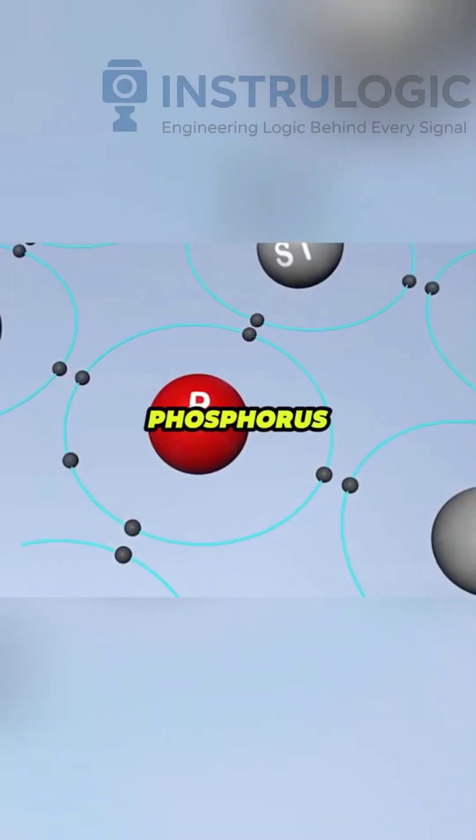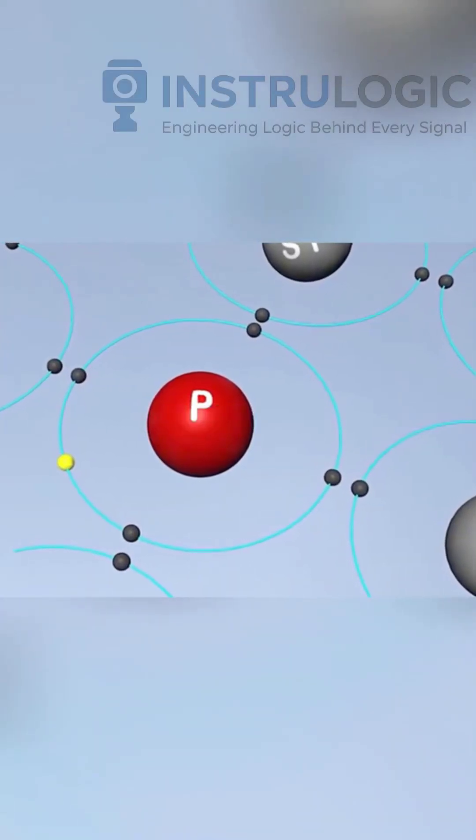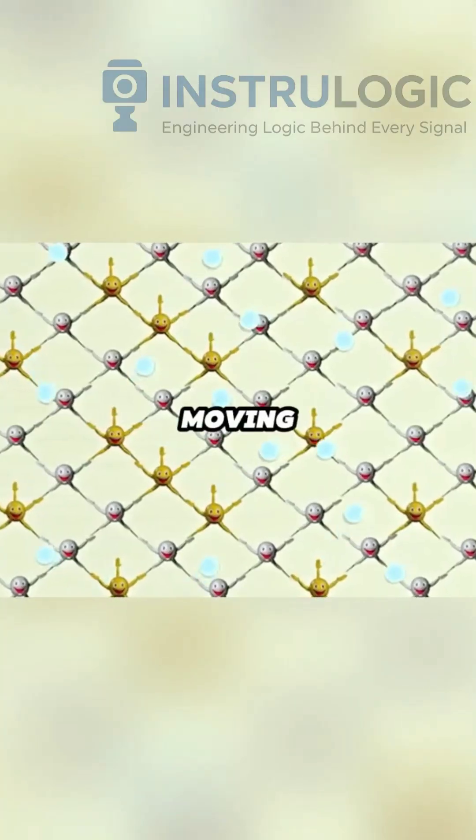But we can add phosphorus, which has five electrons. This creates an extra free-moving electron.